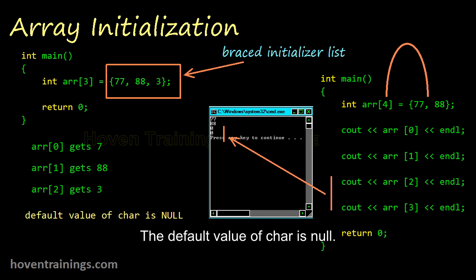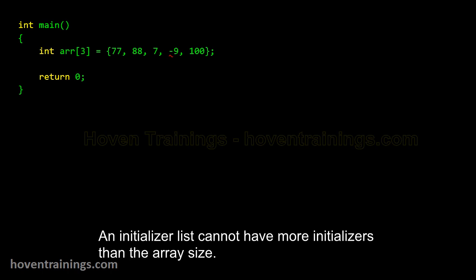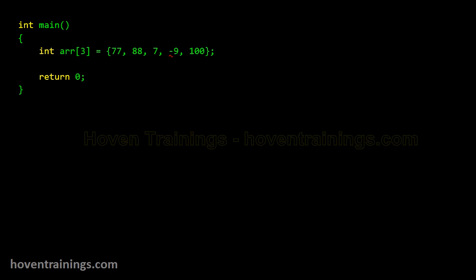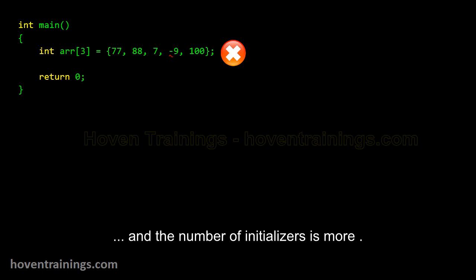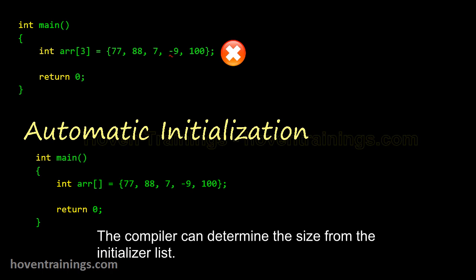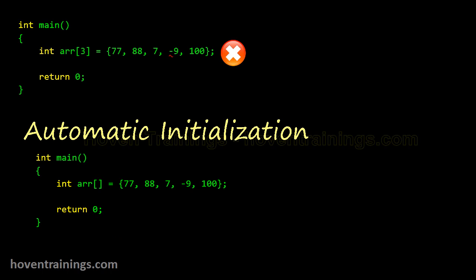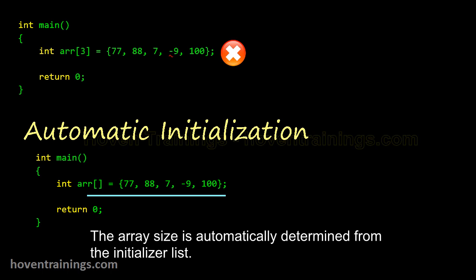The default value of char is null, and the default value of float and double is also 0. An initializer list cannot have more initializers than the array size — it is a compiler error if the number of initializers exceeds the array size. In this code, the size of the array has not been given; the compiler can determine the size automatically from the initializer list. This is called automatic initialization, where the array size is automatically determined from the initializer list.